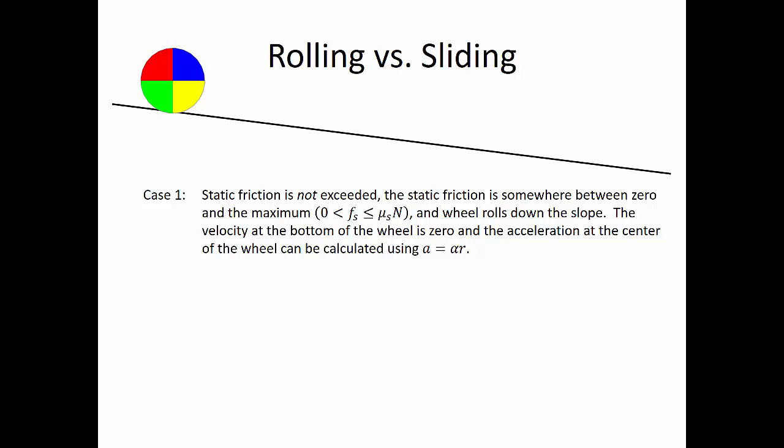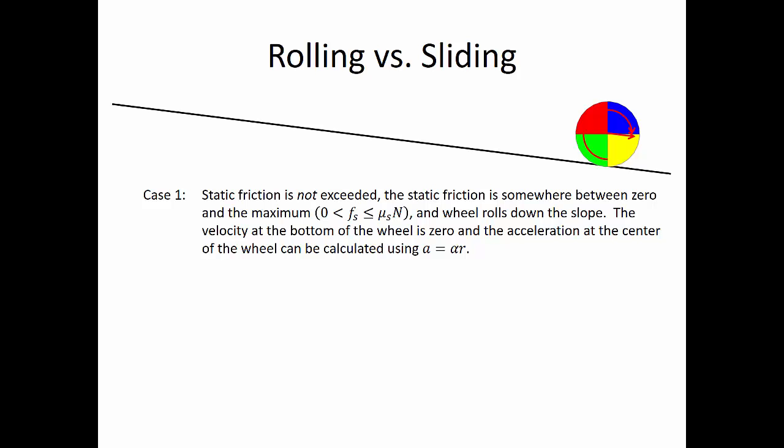There are two cases that we need to consider. The first case is when static friction is not exceeded. In this case, the static friction is going to be somewhere between zero and the maximum static friction, or the coefficient of static friction times the normal force. We don't know what that's going to be, but we just know it's somewhere in that range, and the wheel rolls down the slope. The velocity at the bottom of the wheel is zero, and the acceleration at the center of the wheel can be calculated using acceleration equals angular acceleration times the radius measured from the bottom of the rolling object to the center of gravity.